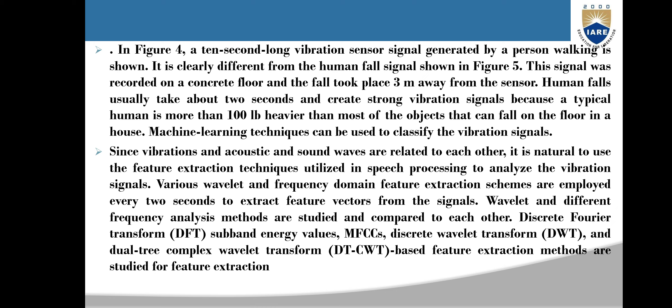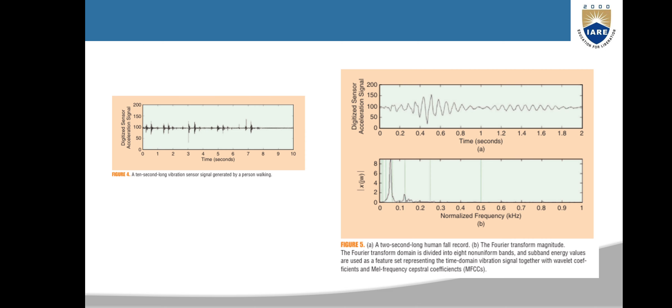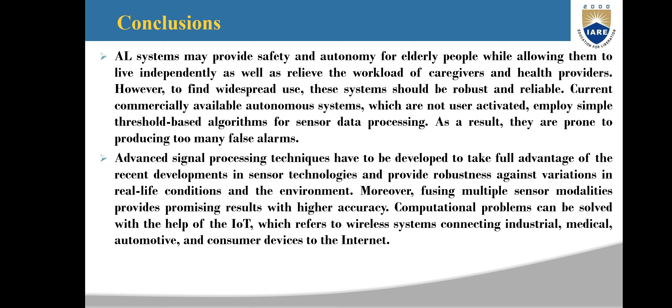A 10-second-long vibration sensor signal generated by a person walking is clearly different from a human fall signal. The signal was recorded on a concrete floor and the fall took place 3 meters above the sensor. Human falls usually take about 2 seconds and create strong vibrations, because a typical human is heavier than most objects that can fall on the floor in a house. Machine learning techniques can be used to classify vibration signals. Since vibration and acoustic sound waves are related, it is natural to use feature extraction techniques from speech processing to analyze vibration signals. Various time-domain and frequency-domain feature extraction schemes are employed every 2 seconds to extract feature vectors. Discrete Fourier transform sub-band energy levels, MFCC, discrete wavelet transform, and dual-tree complex wavelet transform-based feature extraction methods are suited for this purpose.